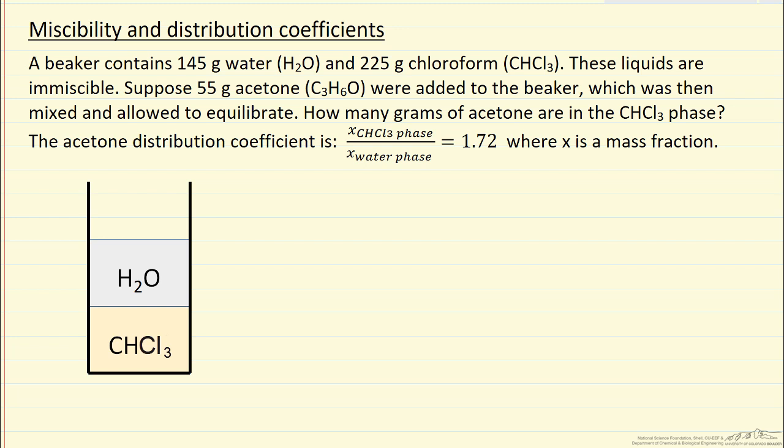We're going to add a third liquid, acetone, and what we're interested in is how the acetone distributes between these two phases. We're given a distribution coefficient, which is the mass fraction of acetone in the chloroform phase divided by the mass fraction of acetone in the water phase. This number is 1.72.